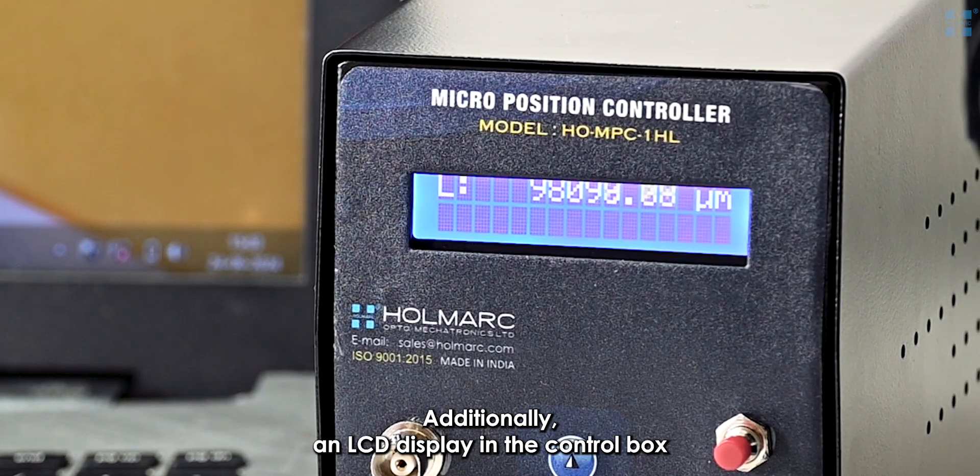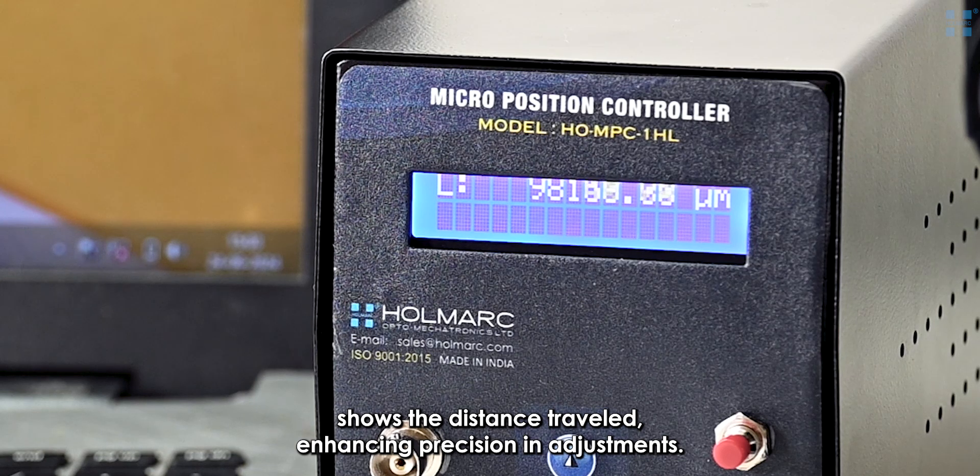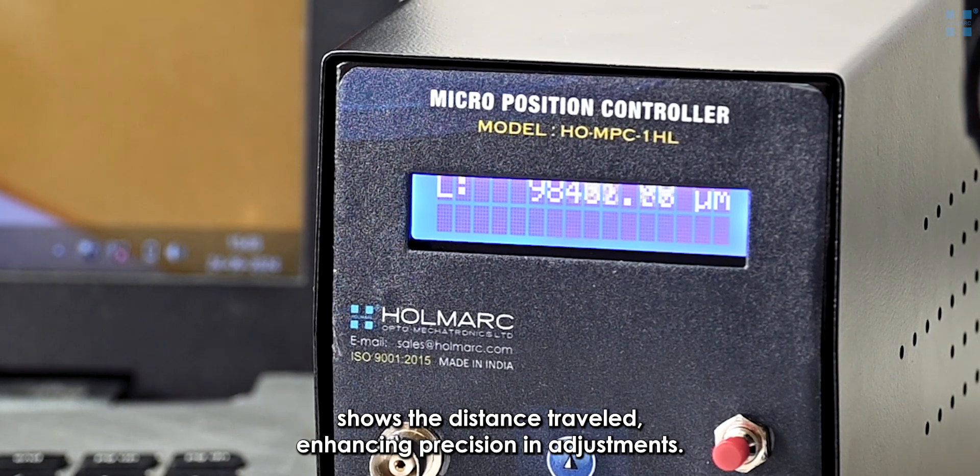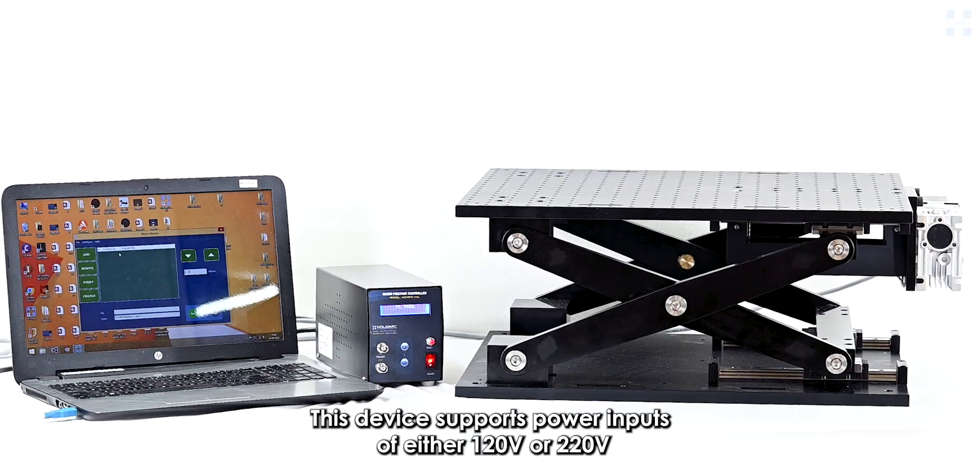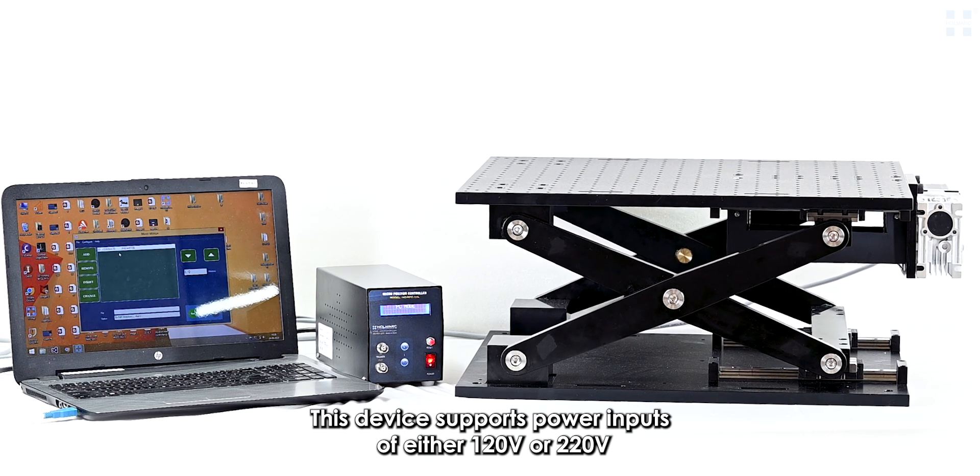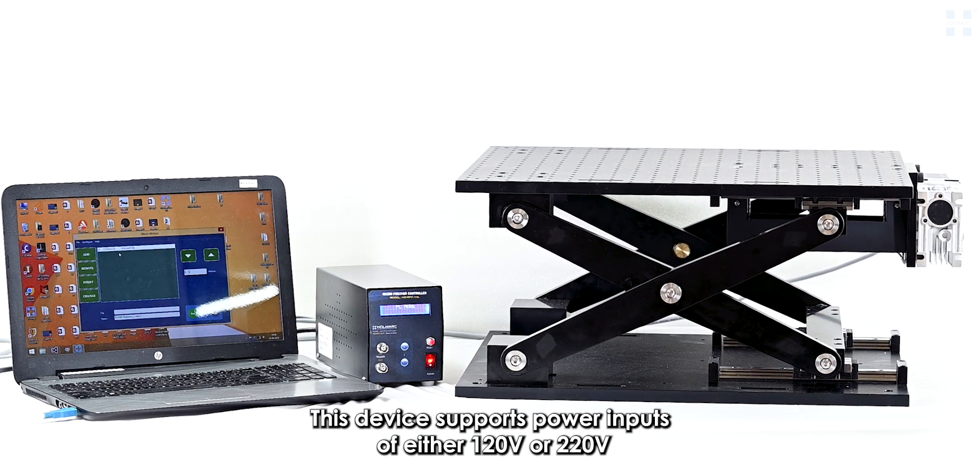Additionally, an LCD display in the control box shows the distance traveled, enhancing precision in adjustments. This device supports power inputs of either 120 volts or 220 volts AC.